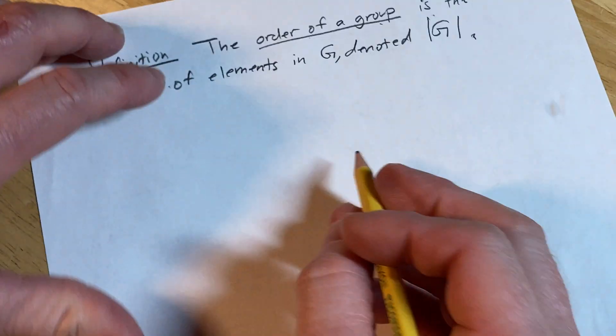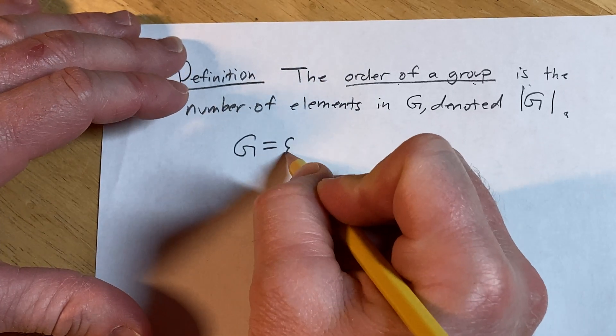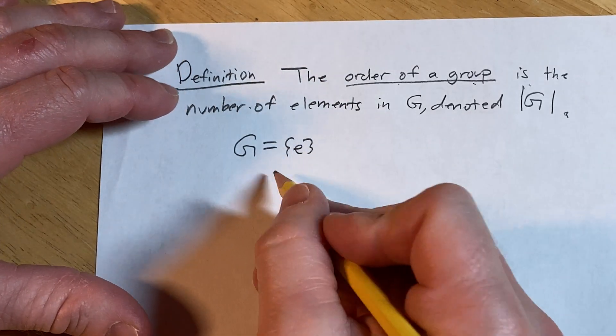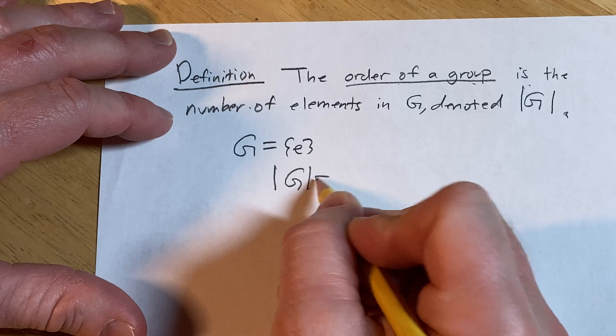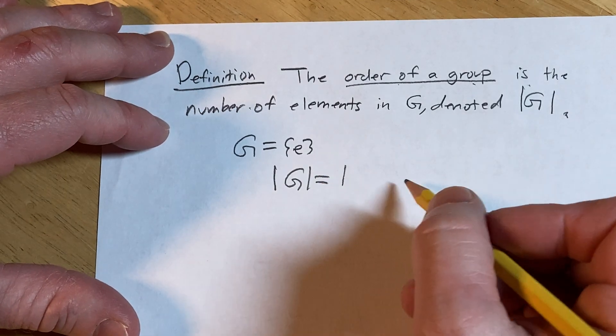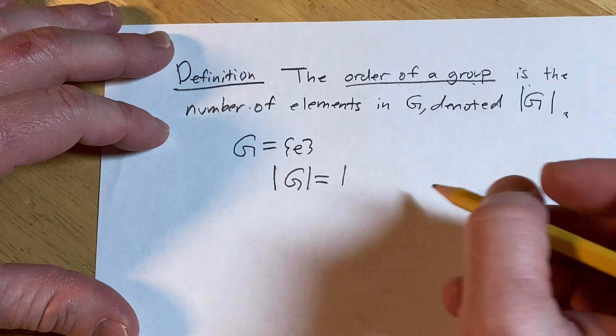For example, if your group G is just the group containing one element, then in this case, G is equal to 1. That's the smallest group.